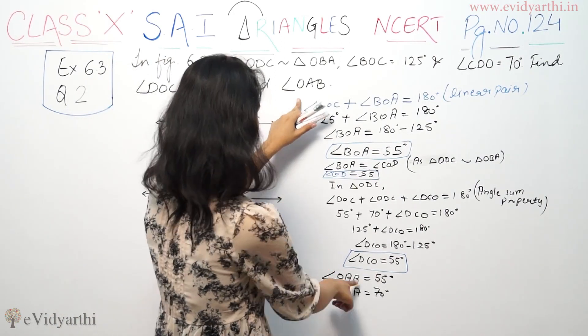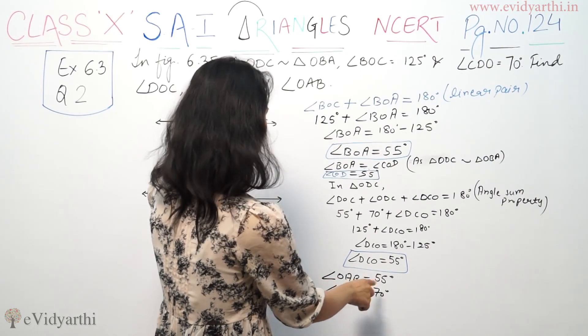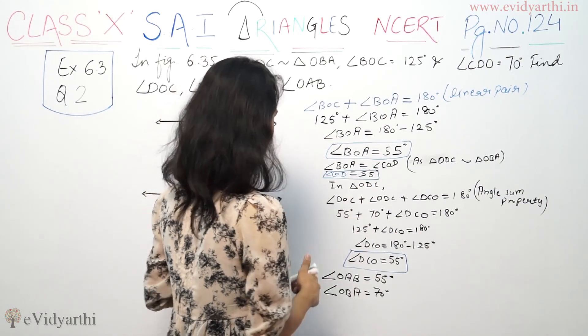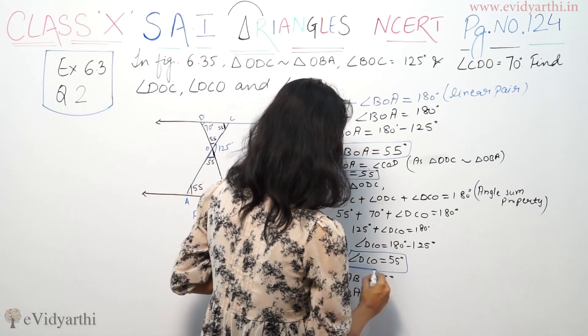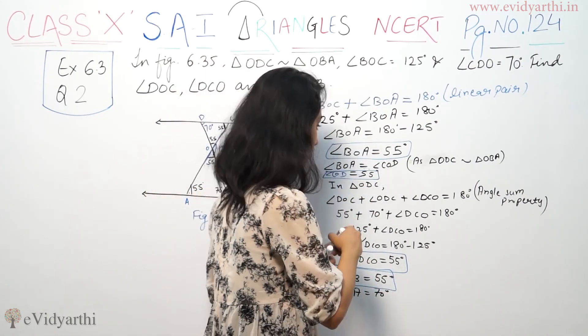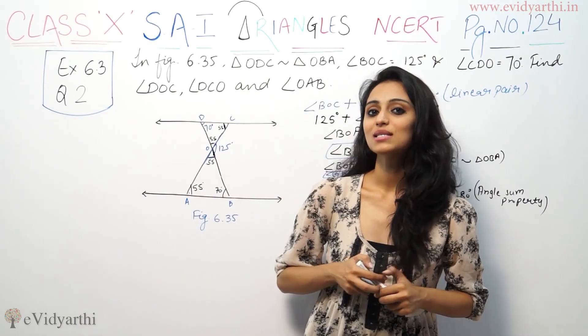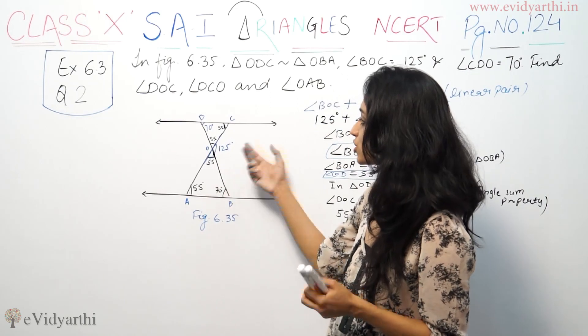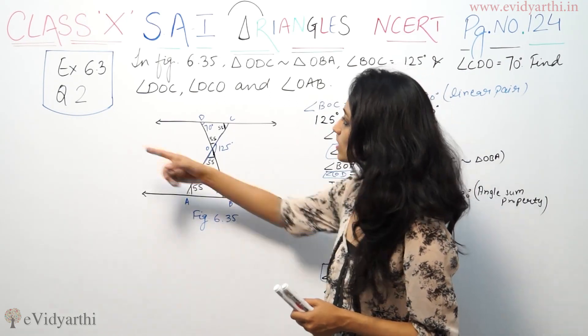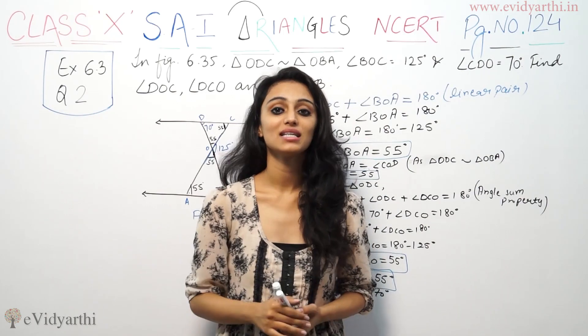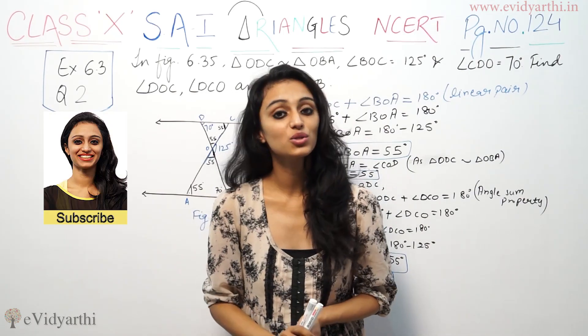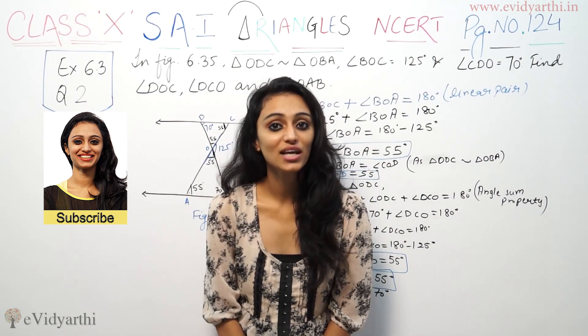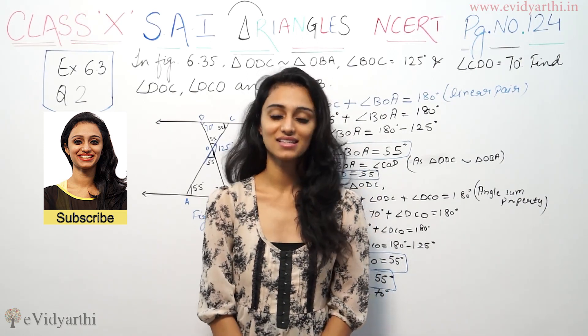The same thing is OAB is DCO. We are also at DOC. Basically the angles are similar and the angles are equal. So, this was the second question, exercise 6.3 of NCERT. In case of any doubt, please do write to us. Please give an email, and watch the next video for some more questions on triangles. Goodbye.